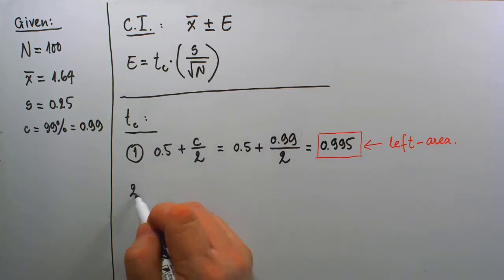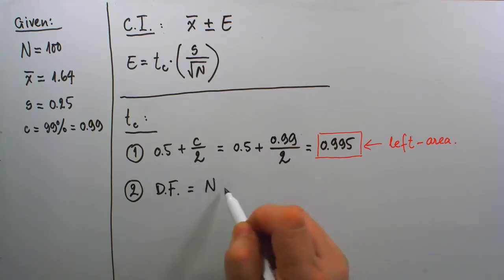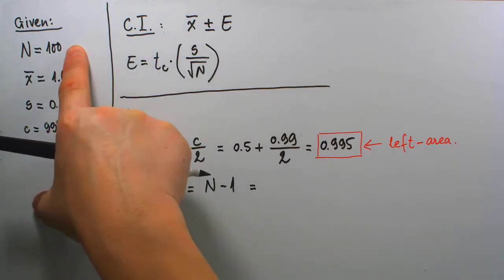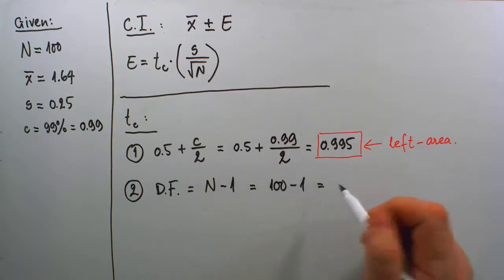Step 2 is to calculate the degrees of freedom for our sample. Degrees of freedom of any sample is found by the sample size minus 1. In our case, since our sample is as large as 100, we're looking at degrees of freedom = 100 - 1 = 99.